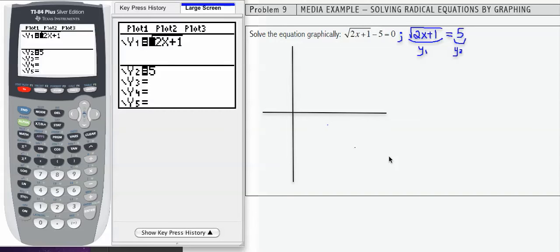In this problem, I'm asked to solve the equation graphically: square root of 2x plus 1 minus 5 equals 0. What I'm going to do first is add 5 to both sides so that the radical part of the equation is isolated. That's going to be my y1, and the 5 on the right-hand side is going to be my y2.